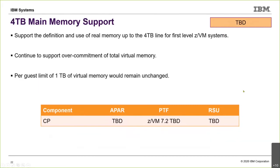We're also looking for sponsor users for four-terabyte main memory support. Right now the limit is two terabytes; we're looking to double that sometime after completing 7.2. The guest limit — individual virtual machines — would still be one terabyte, but real memory support would double. That would only be on the 7.2 item when it comes out.